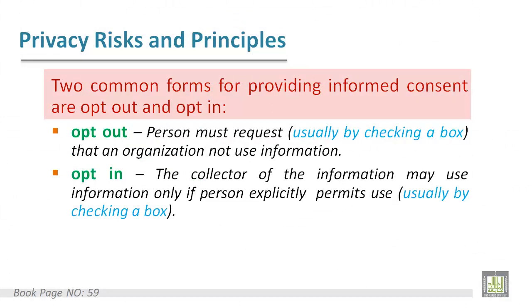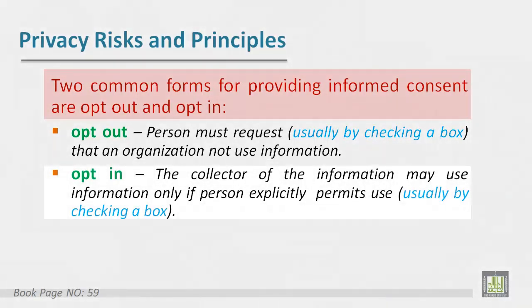There are two common forms of providing informed consent: opt-out and opt-in. Opt-out means a person must request that an organization not use their information. Opt-in means the collector of information may use information only if the person explicitly permits its use.